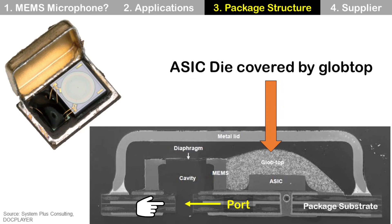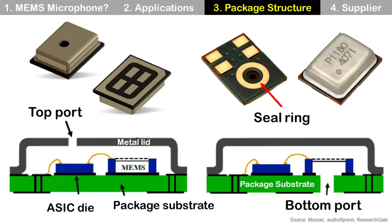There is a hole in the package substrate, called the port, and sound waves travel to the MEMS microphone die through this hole. There are two types of MEMS microphone based on port position: one is top port, and the other is bottom port.